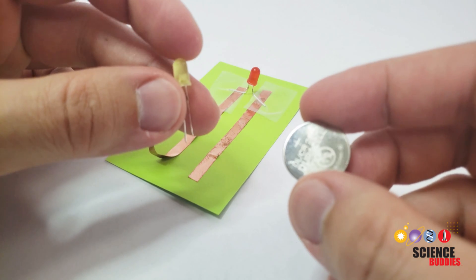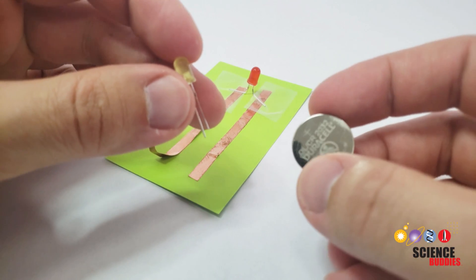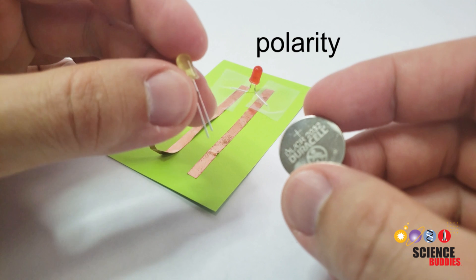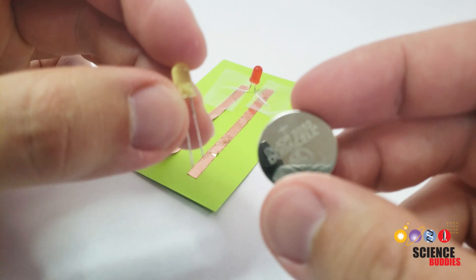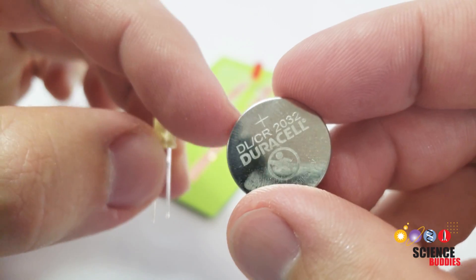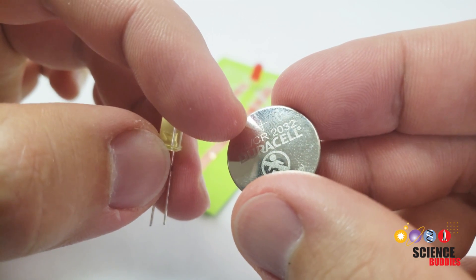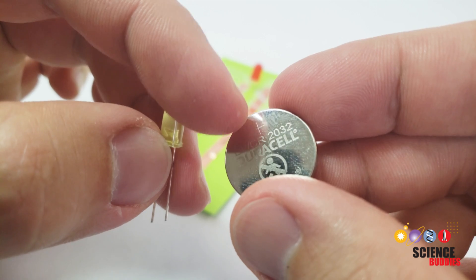Next, you'll connect one of your coin cell batteries to the circuit. Before we do that, we need to talk about polarity. LEDs and batteries both have polarity, meaning they have a positive side and a negative side. The positive side of the battery is usually easily identified by a plus symbol.